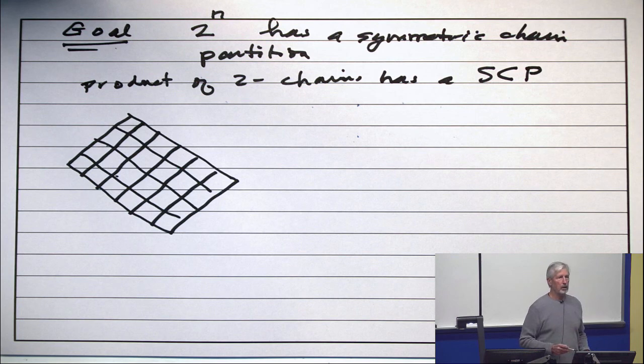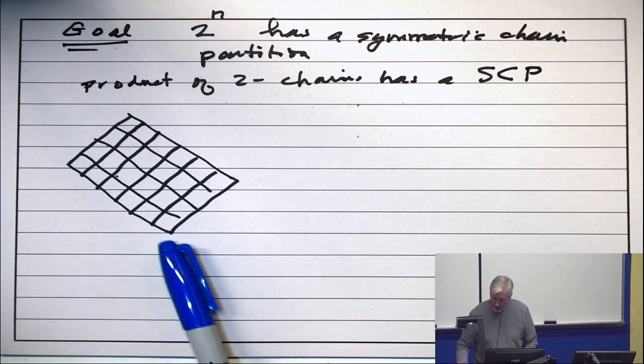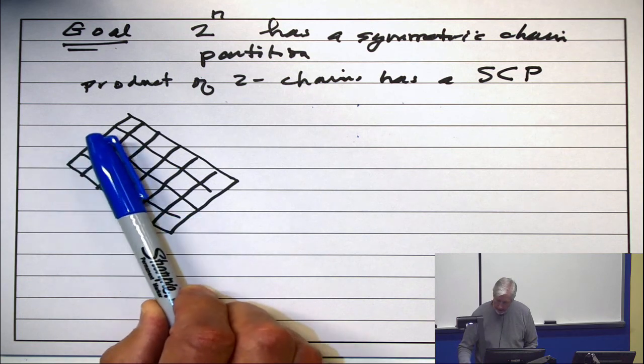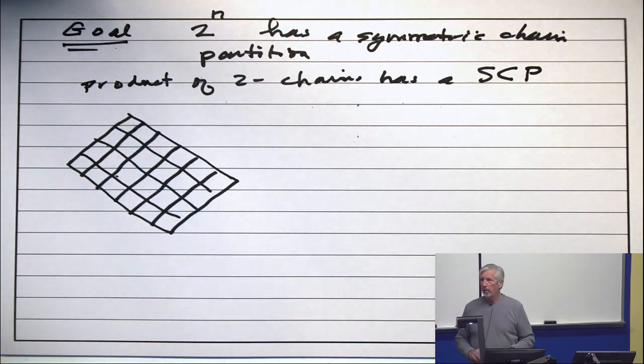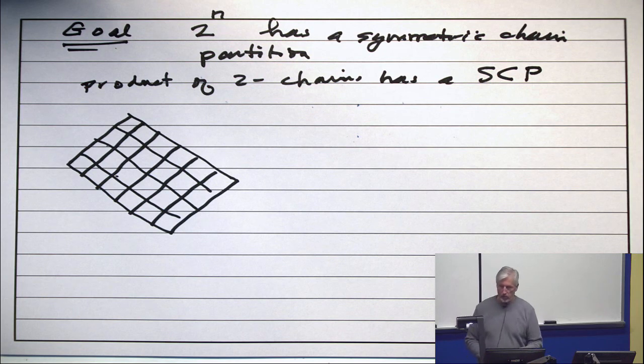Do you see this poset? Do you see the middle level? It's ranked 1, 2, 3, 4, 5, 6, 7, 8, 9, 10, 11. So, the height is odd, and so the middle level goes right through some points.